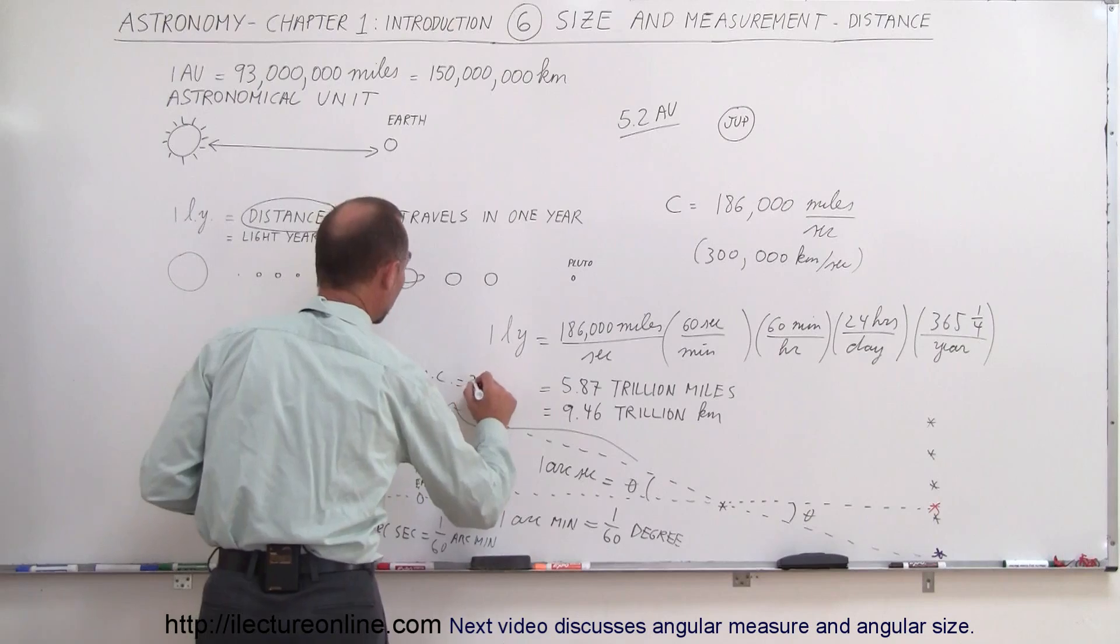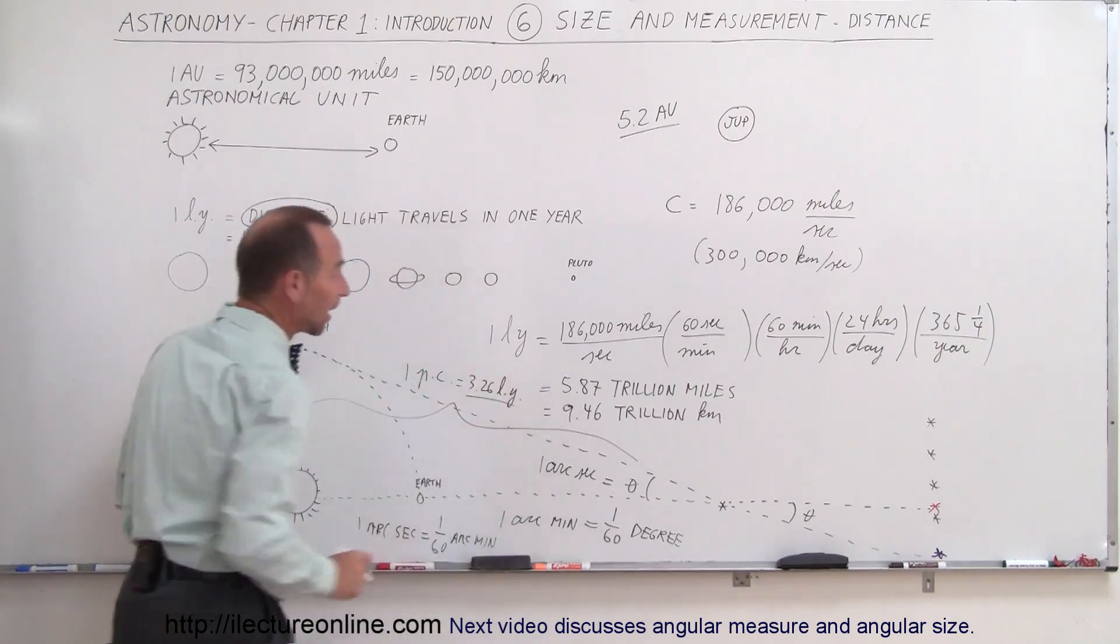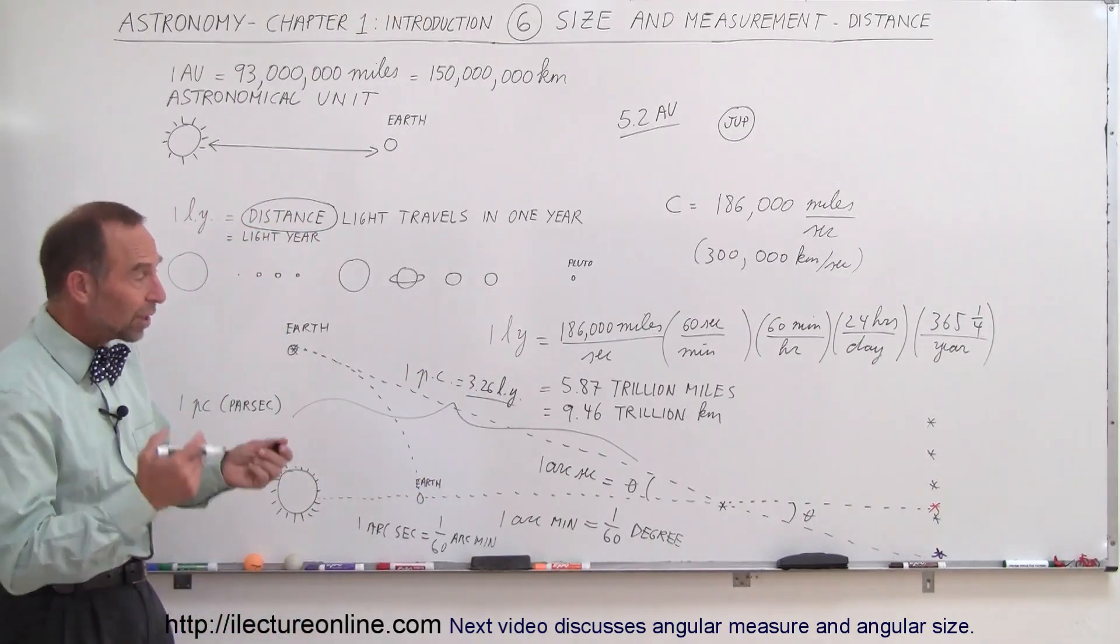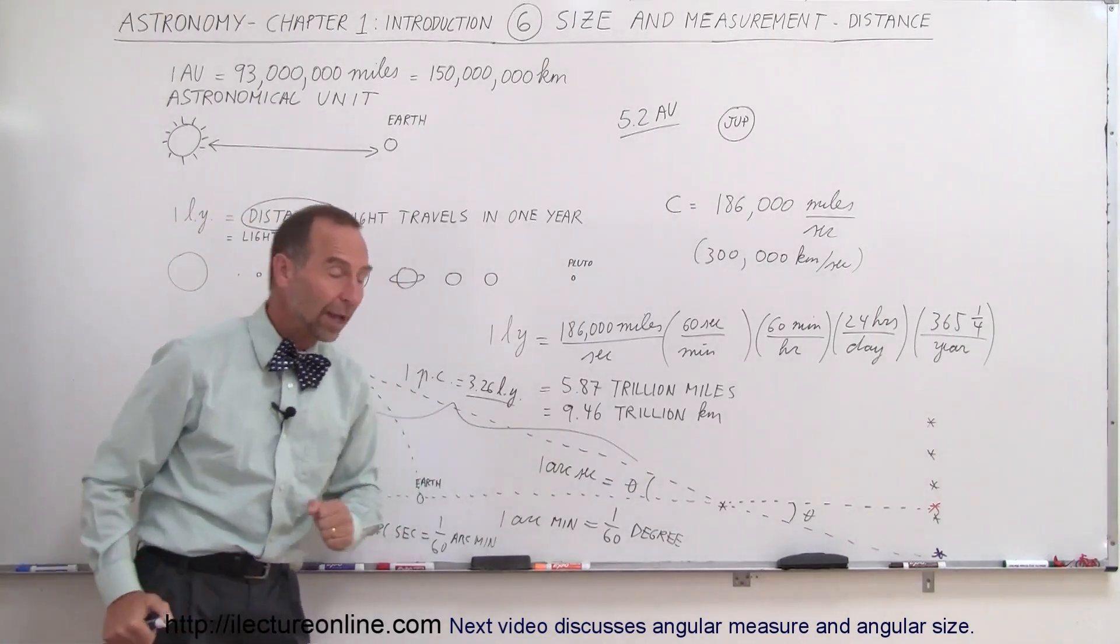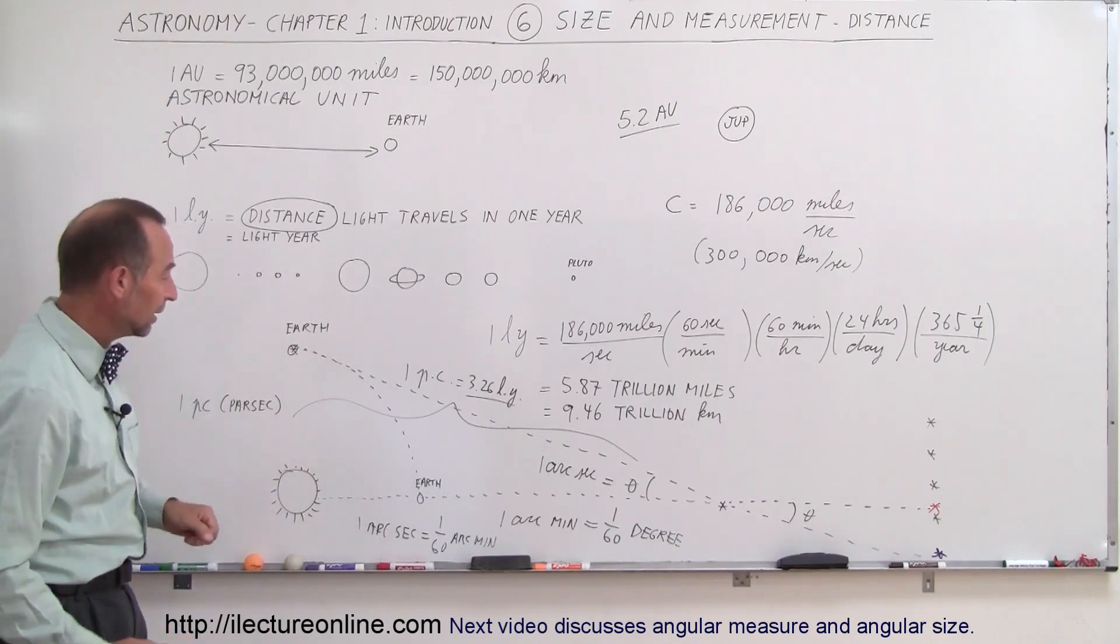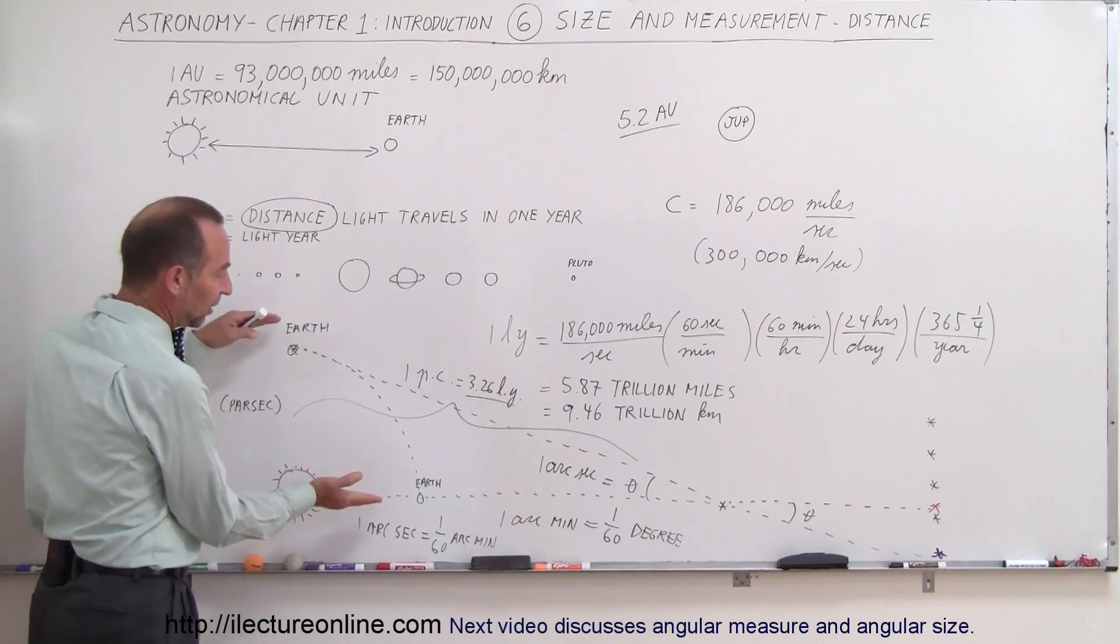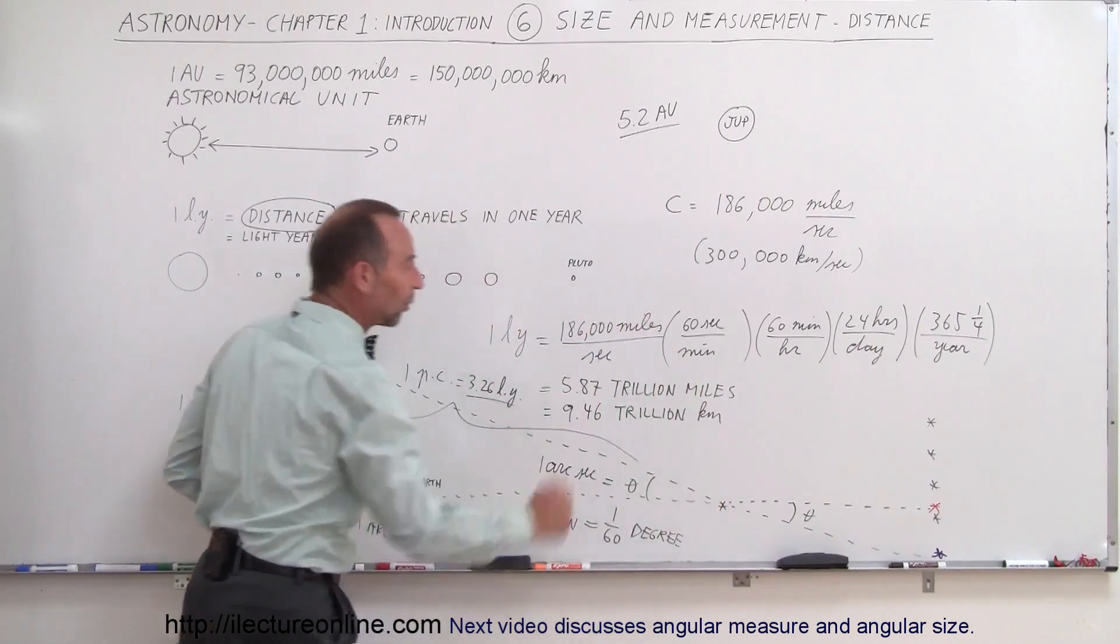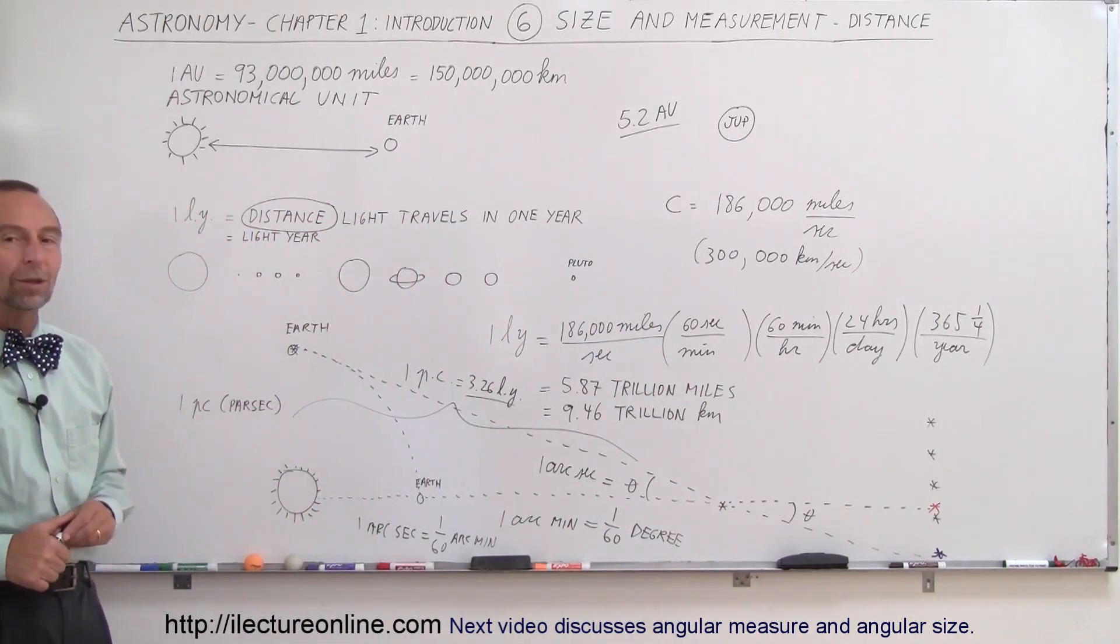And what is one parsec? Well, one parsec is equal to 3.26 light years. All right, so since a light year is about 6 trillion miles, 3.26 light years is about 20 trillion miles. So if a star is about 20 trillion miles away and the Earth moves through a quarter of its path along the path that it goes around the sun, then you can see that when the angle here is measured to be one arc second, we know that the distance then is about 20 trillion miles, 3.26 light years, what we call one parsec.